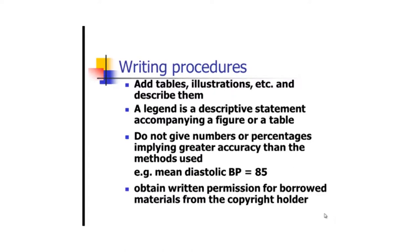Do not give numbers or percentages that imply greater accuracy than the methods used. For example, if your measurements were up to one decimal point, do not include five decimal points just because SPSS or Epi Info can give you five. The order of accuracy from your instrument was one decimal point, so you include only one.